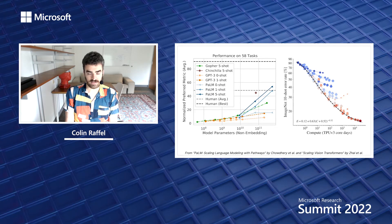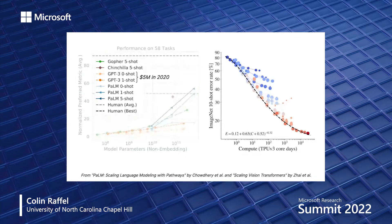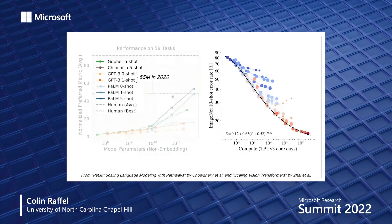Looking at NLP specifically, a downside to this increase in scale is a corresponding increase in computational and financial costs. On the left, we see performance of various large language models on the Big Bench benchmark. The GPT-3 models would have cost around $5 million to train when released in 2020. Subsequent models like Gopher and Chinchilla cost a bit more, and the most recent model, PaLM, publicized this year, would have cost around $27 million.